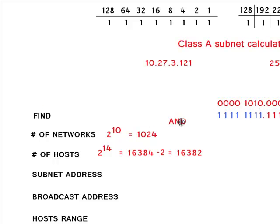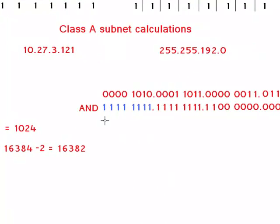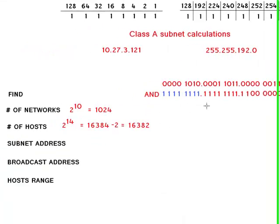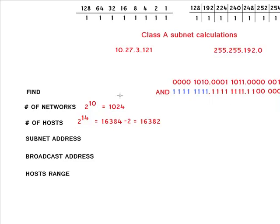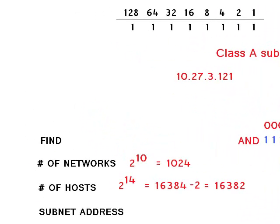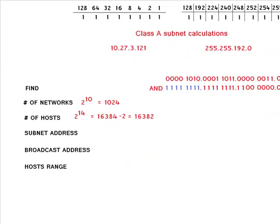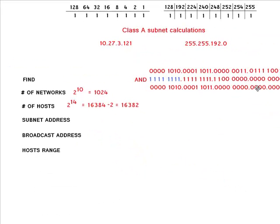So let's do the AND operation, and for example quickly, 0 and 1 will give us 0, 1 and 1 here gives us 1, 0 and 1 gives us 0, 0 and 1 gives us 0, and so on. And the result is this. I try to align it here.